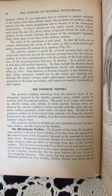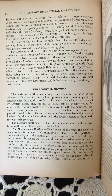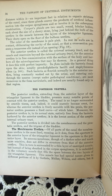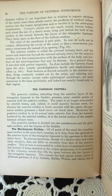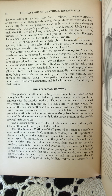The membranous urethra. Of all parts of the canal, the membranous urethra is the most fixed, running from the aperture in the anterior layer of the triangular ligament to the aperture in the posterior layer. Its mucous membrane, though of a darker color and much more sensitive, does not differ in structure from that of the anterior urethra. This is surrounded by a thin layer of unstriped muscle, but instead of being sheathed in the corpus spongiosum, it is embedded in the voluntary muscle that fills the space between the two layers of the triangular ligament.